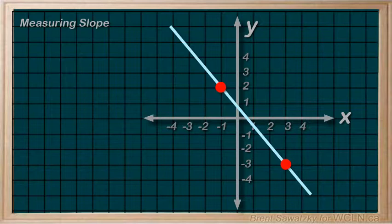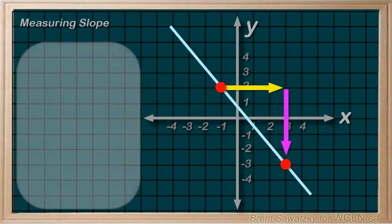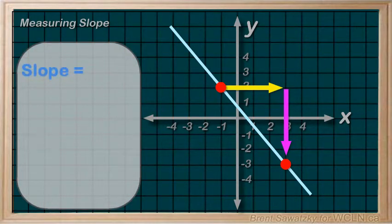Once we have our points, we can draw our triangle. Our run, positive to the right. And then our rise. Which, in this case, we're dropping. So, we head down. Now, we pull out our definition as slope, rise over run.